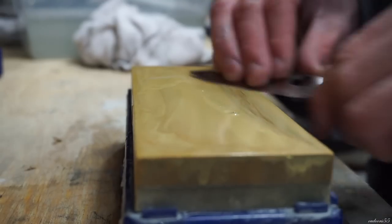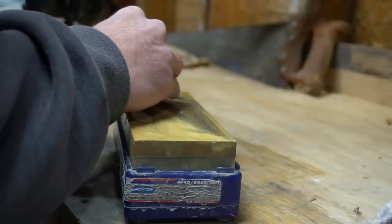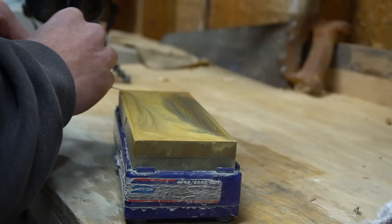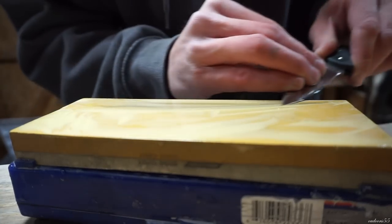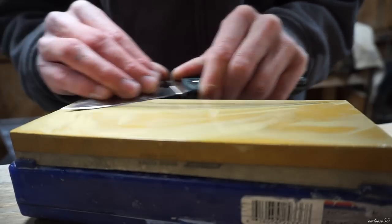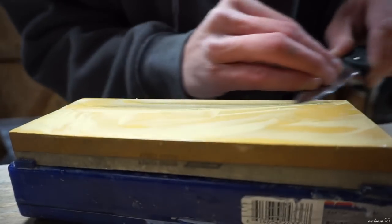And finally on to the 8000 grit Norton stone. This is really nothing more than a polishing stone. You can see some black streaks on the stone where it is cutting and removing a little bit of metal but let me tell you it is not much. You really can't do any kind of significant metal removal on the stone and you really have to treat it as a polishing only stone.